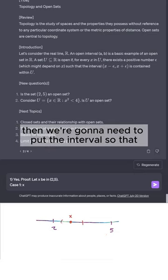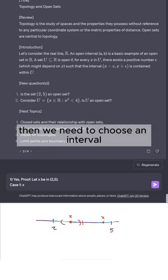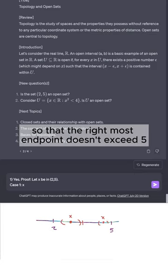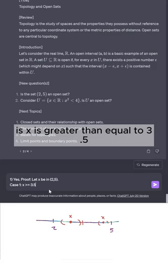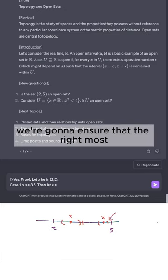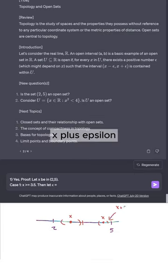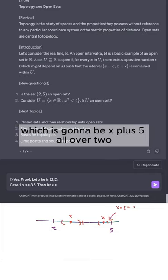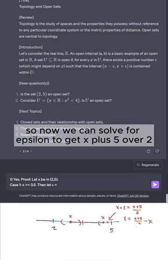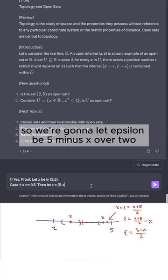If we're on the left side, then we're going to need to put the interval so that the left side doesn't cross the number 2. And if we're on the right side, then we need to choose an interval so that the rightmost endpoint doesn't exceed 5. So case 1 is x ≥ 3.5. Then we're going to ensure that the rightmost interval doesn't exceed 5. The way we're going to do that is pick x + epsilon to be the midpoint between x and 5, which is (x + 5)/2. So now we can solve for epsilon to get epsilon = (5 - x)/2.